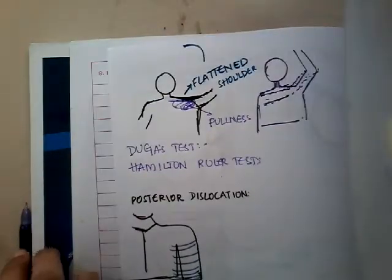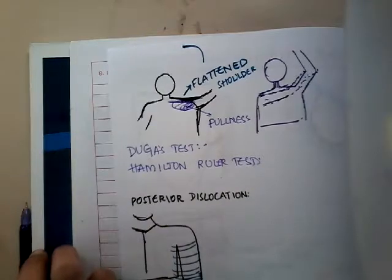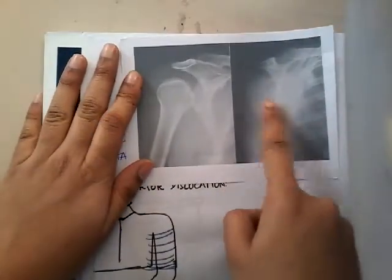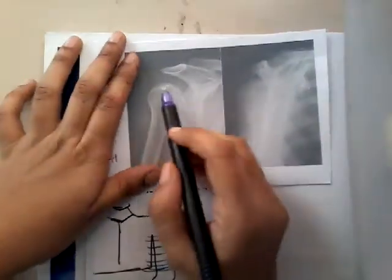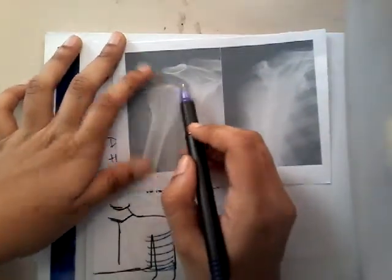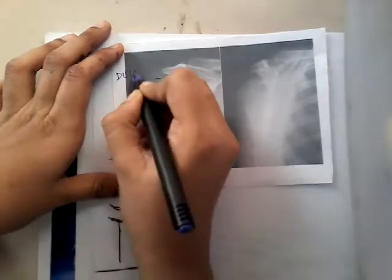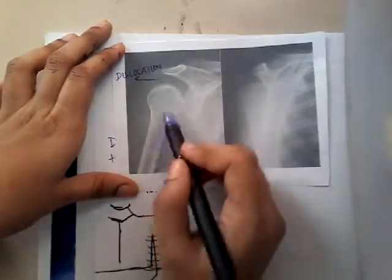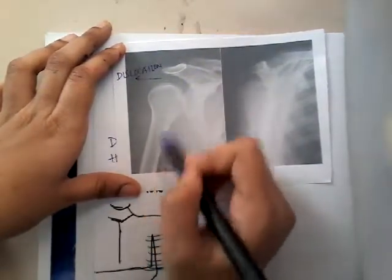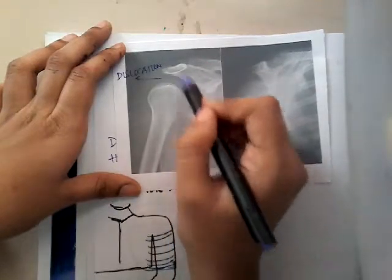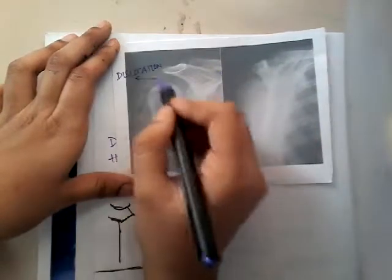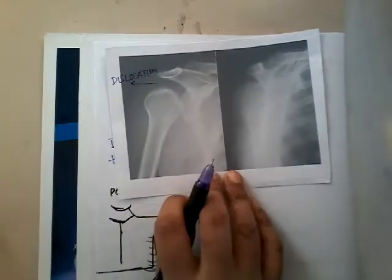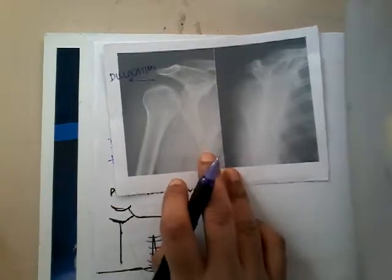The best diagnosis is through an x-ray. On the x-ray, you can see increased joint space, which shows dislocation of the shoulder joint. The landmarks visible are the glenoid labrum, acromion process, clavicle, and humerus. The increased joint space between them confirms the dislocation.